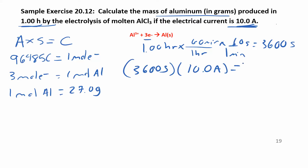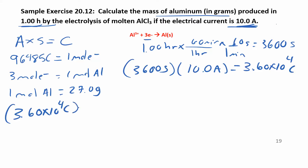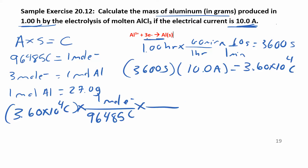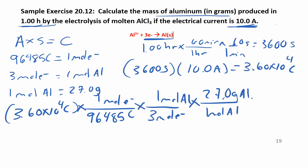We have 3.60 × 10⁴ coulombs. Dividing by 96,485 coulombs per mole of electrons gives moles of electrons transferred. Then using the stoichiometry — for every three moles of electrons we get one mole of aluminum — and the molar mass of 27 g/mol, we work it all out and get about 3.36 grams of aluminum.